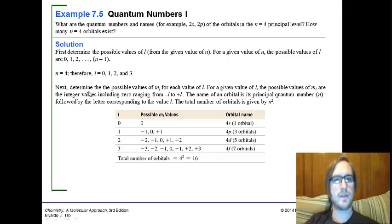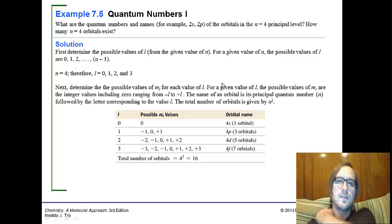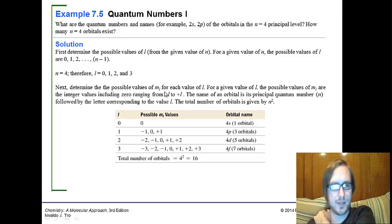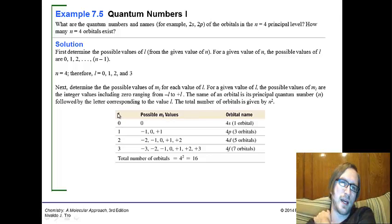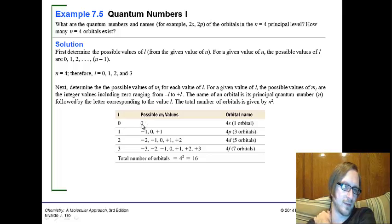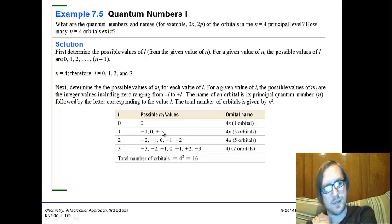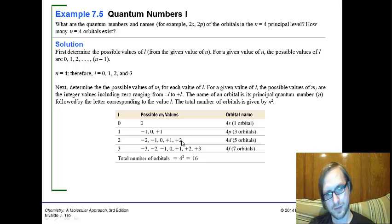Then we have to determine the values of ml for each value of l. For a given value of l, the possible values of ml are the integer values including 0 ranging from negative l to positive l. So for l equals 0, from positive 0 to negative 0 is just 0. For l equals 1, from negative l to positive l, that's negative 1, 0, positive 1. For l equals 2, we go from negative l to positive l: negative 2, negative 1, 0, positive 1, positive 2.